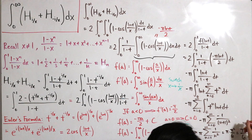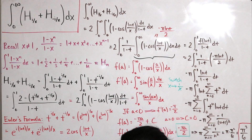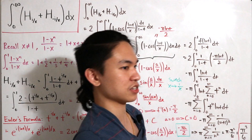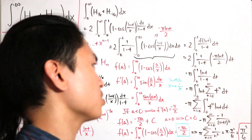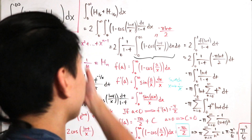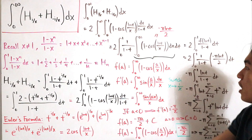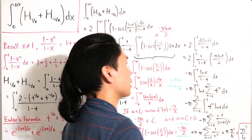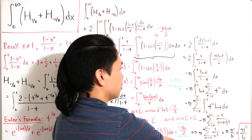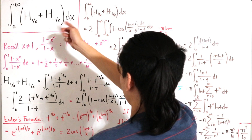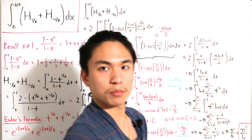And there we have it — the final answer is π³/6. This is the first time on this channel dealing with harmonic number integration; previously I'd done harmonic infinite sums. Using a bunch of formulas and techniques including Euler's formula, Feynman's technique, and Basel's problem, we evaluated the integral of H(i/x) + H(−i/x) to get π³/6 — pretty cool!